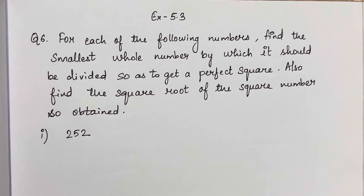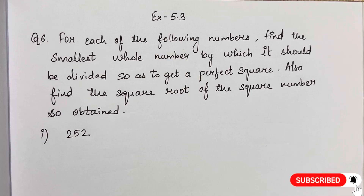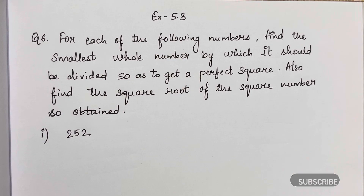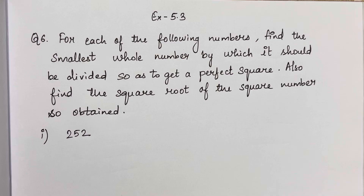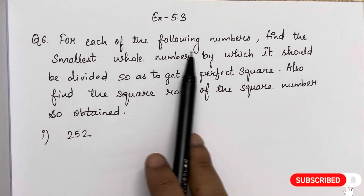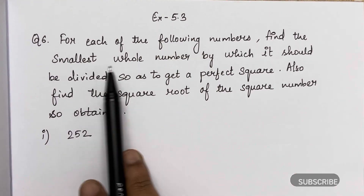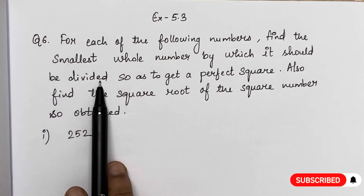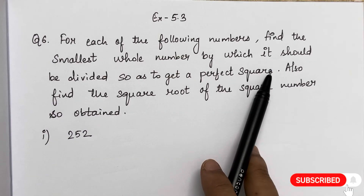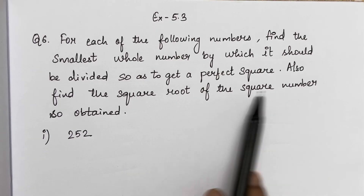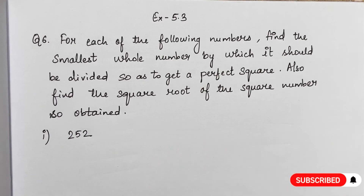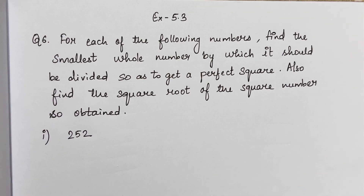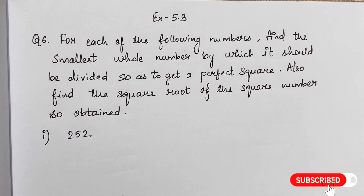Hello students, welcome to Fun with Study. In this video we will solve Chapter 5 Squares and Square Roots, Exercise 5.3, Question Number 6. Look at this question: for each of the following numbers, find the smallest whole number by which it should be divided so as to get a perfect square. Also find the square root of the square number so obtained. Here there are some numbers given and those numbers are not a perfect square.